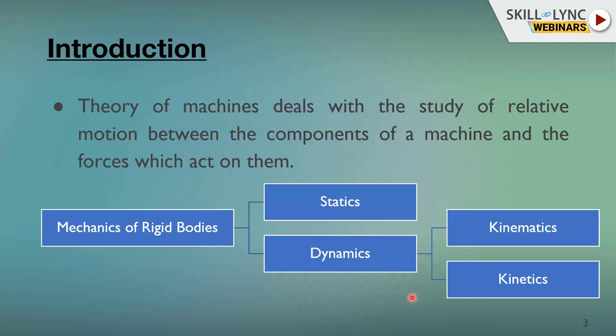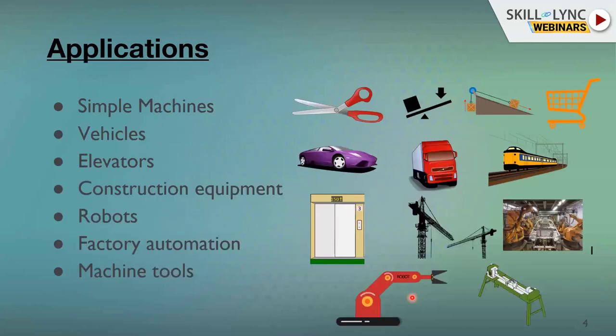A machine is something which uses available energy and transfers it into useful work. A machine is constituted by mechanisms, but the terms mechanism and machine are very frequently used interchangeably in Theory of Machines. Before going into that detail, let me give some applications of machines we encounter in daily life.